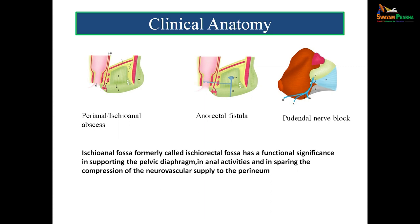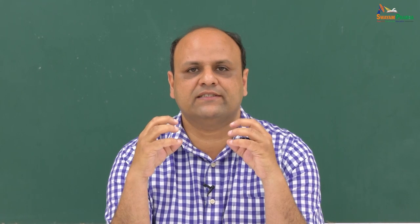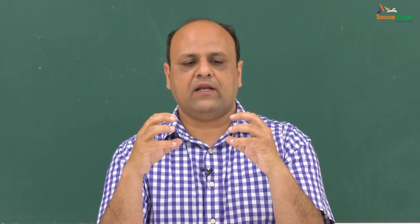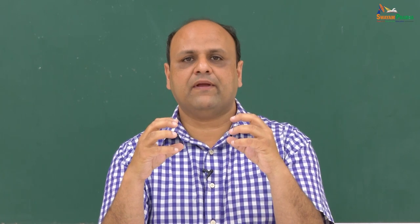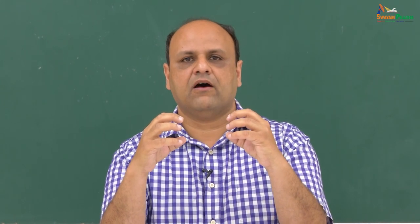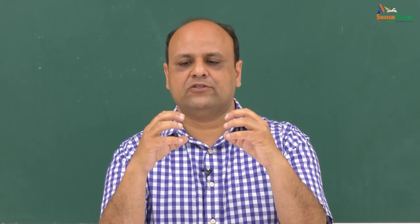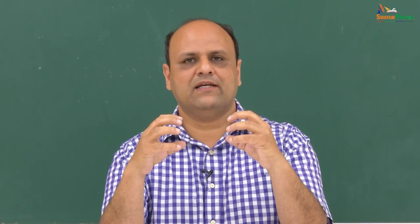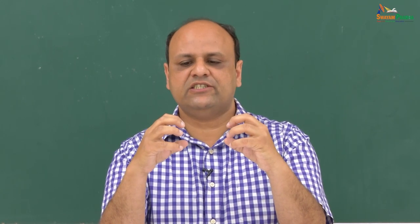It is a wedge-shaped fossa present on each side. If I put my hands like this, one hand is representing the fossa of the right side and one hand is representing the fossa of the left side. It is a fat-filled space - there are other structures also in it which we will describe in detail. It is a fat-filled space on either side of the anus, and it is better called the ischioanal fossa. The gap between my fingers of the two hands represents the anus.